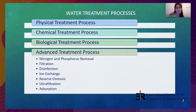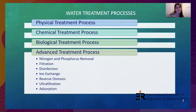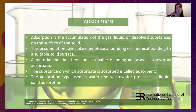Wastewater treatment processes are classified as physical, chemical, biological, and advanced. Advanced treatment processes include nitrogen and phosphorus removal, filtration, disinfection, ion exchange, ultrafiltration, reverse osmosis, and adsorption. In this study, the adsorption method was used. Adsorption is the accumulation of a liquid or dissolved substance on the surface of solids through physical or chemical bonding on a suitable solid surface.